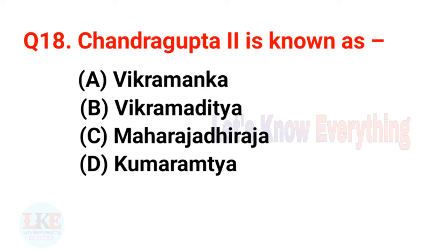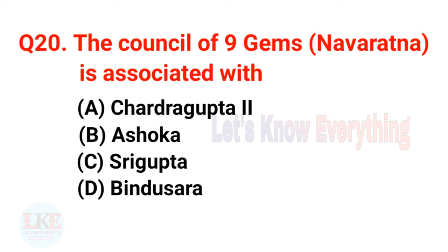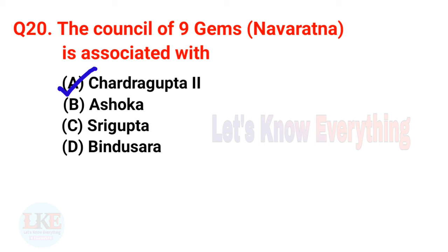Question 18: Chandragupta II is known as Vikramaditya. Question 19: The famous physician in the court of Vikramaditya was Dhanvantari. Chandragupta II is associated with the nine gems, or Navaratna, who adorned his court.